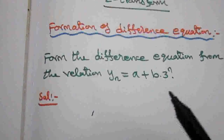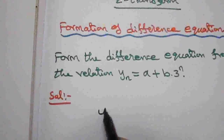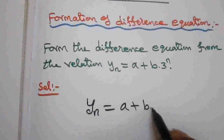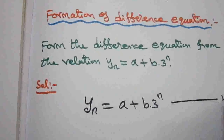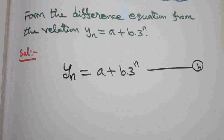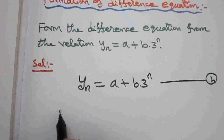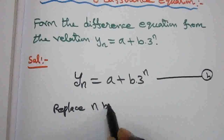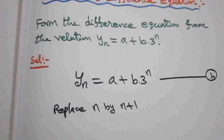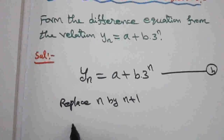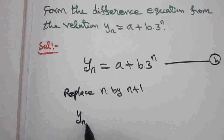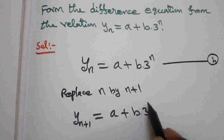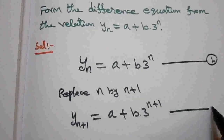Now the given relation is yn equal to a plus b into 3 power n. Take that as equation number 1. Now in equation 1 I am going to replace n by n plus 1, so that y(n+1) is equal to a plus b into 3 power n plus 1. Take that as equation number 2.